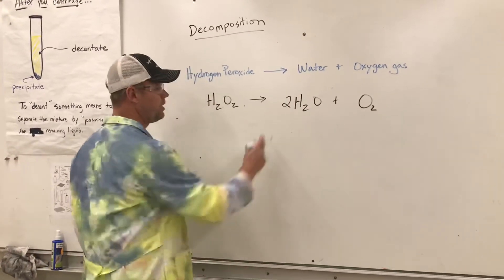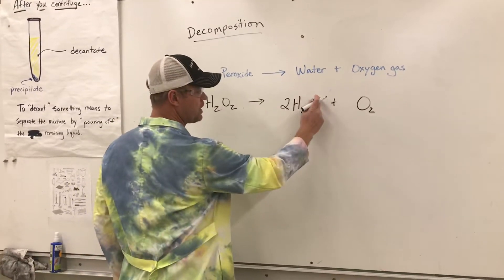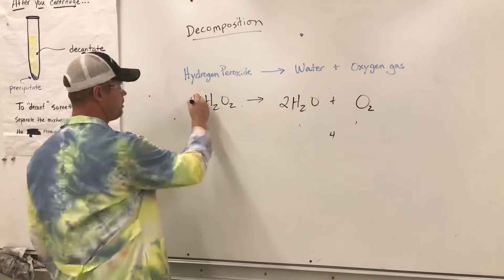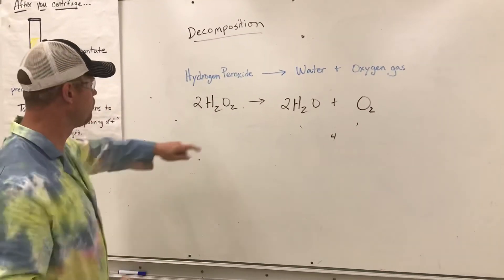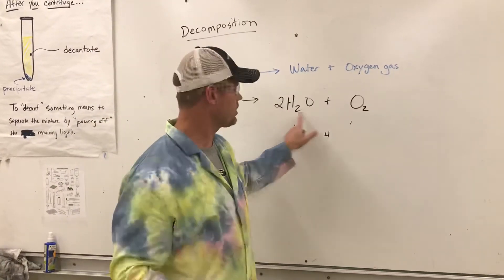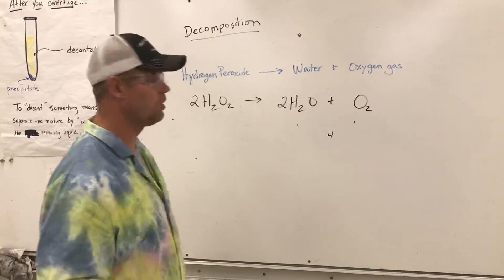So I have a total of 4 oxygens on the right. So I'm going to put a 2 right there, and now everything balances. So that means 2 moles of hydrogen peroxide produce 2 moles of water, and then those extra oxygen atoms come together to make 1 mole of oxygen gas.